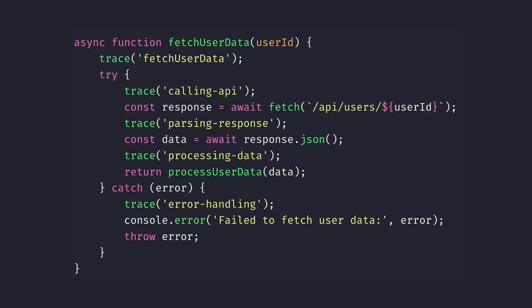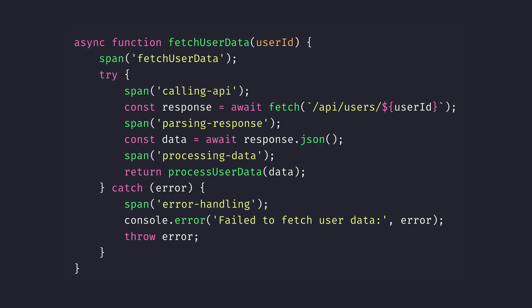Now that we understand what traces and spans are, let's look at why people often get them confused, and why that can actually be an issue. Developers will say 'I'm adding traces to this function' when they're actually adding spans. I used to make the exact same mistake. The confusion is understandable — both traces and spans track timing and operations, and they're incredibly similar due to their linked nature. But it's like saying you're completing the order when you're actually still cooking it.